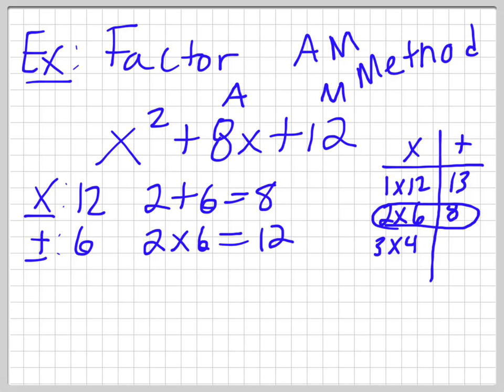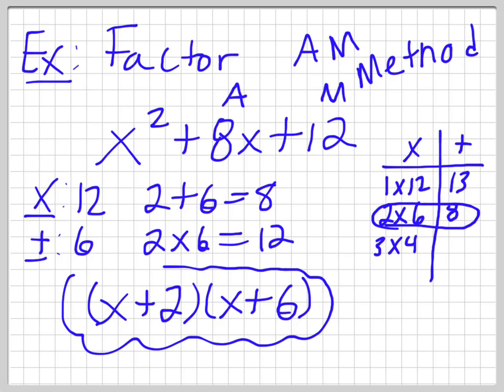So the numbers are 2 and 6. So now we have to write it in factored form. So the factored form is we do x plus the first number, which is 2 or 6, doesn't matter, x plus 2, then x plus the second number, which is 6. And that's my factored form. So that is how we factor a trinomial into two binomials.